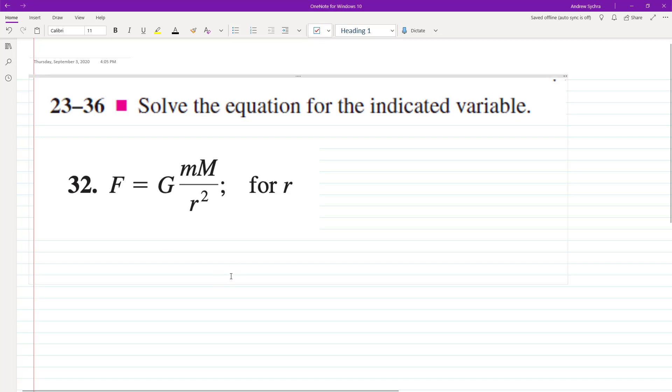All right, so let's go ahead and solve the equation for the variable r. So first thing we'll do, actually what we can do in this equation is we can rewrite this as to make this easier to see. F is equal to G, big G, little m, big M times 1 over r squared.